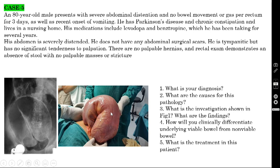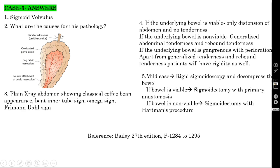Here you see the X-ray, and here you see the actual intraoperative picture. When you open the abdomen, this will pop out — it looks like a tire, so it is called tire-like appearance — enormous distension. The causes of sigmoid volvulus include narrow attachment of the pelvic mesocolon, long pelvic mesocolon, loaded pelvic colon due to high-fiber diet, and adhesion at the summit of the loop. The coffee bean appearance is also known as the bent inner tube sign, omega sign, and Freeman-Doll sign.